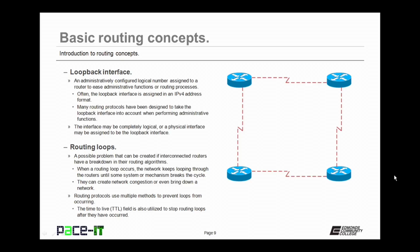A routing loop is a possible problem that can be created if interconnected routers have a breakdown in their routing algorithms. When a routing loop occurs, network traffic keeps looping through the routers until some system or mechanism breaks the cycle. Routing loops can create network congestion or even bring down a network. Routing protocols use multiple methods to prevent routing loops from occurring. One of the main methods is the time-to-live field, or the TTL field. The TTL field keeps track of how long that packet has been in existence and how far it has traveled, and after a specified amount of time or distance, it will inform the next router to drop it, helping to prevent routing loops.